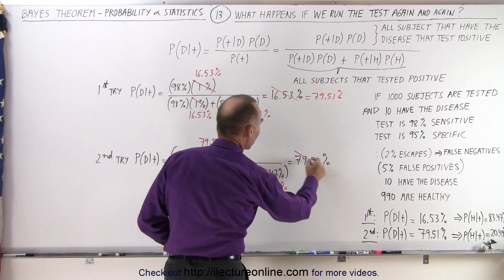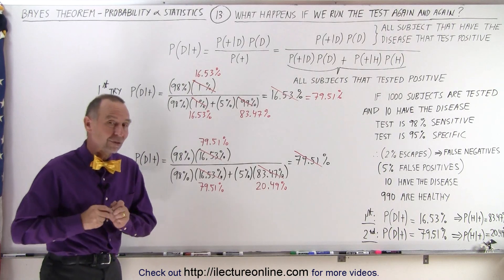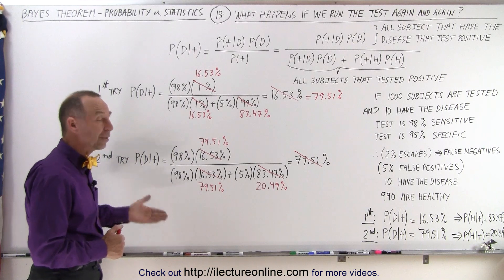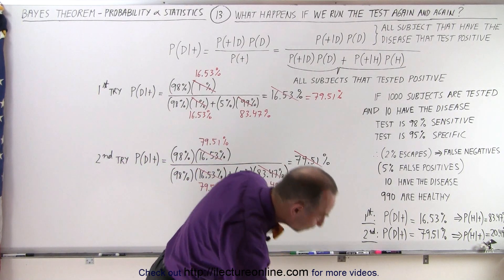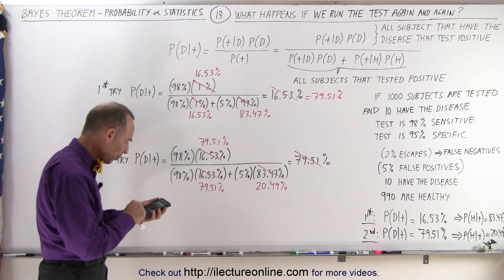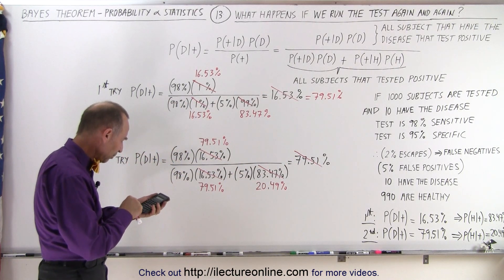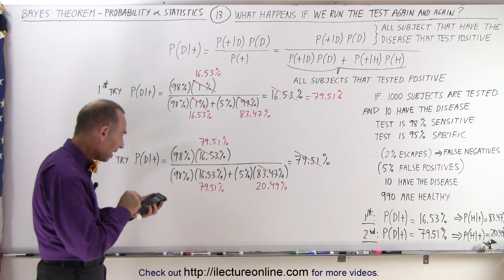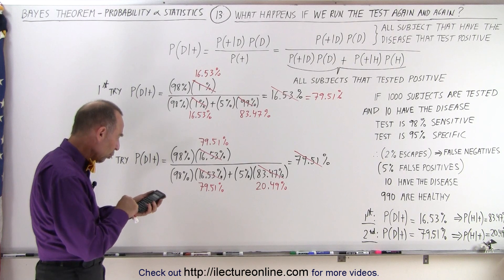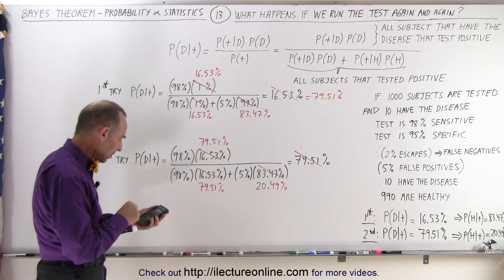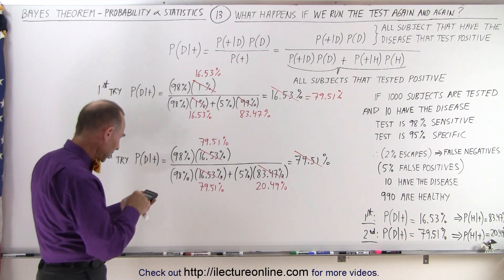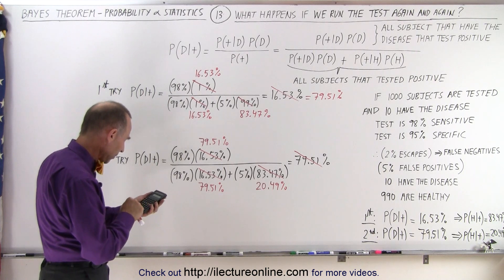So let's see what the new probability will be: if you test three times and all three times you test positive, what will be the probability that you have the condition you were looking for? In the denominator, we have 0.98 times 0.7951, plus 0.05 times 0.2049. And we bring that to the numerator and multiply times 0.98 and times 0.7951.